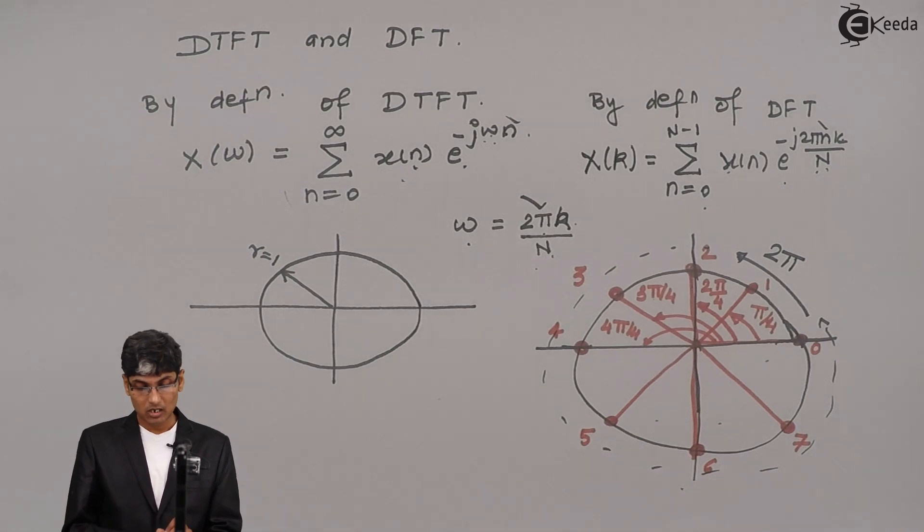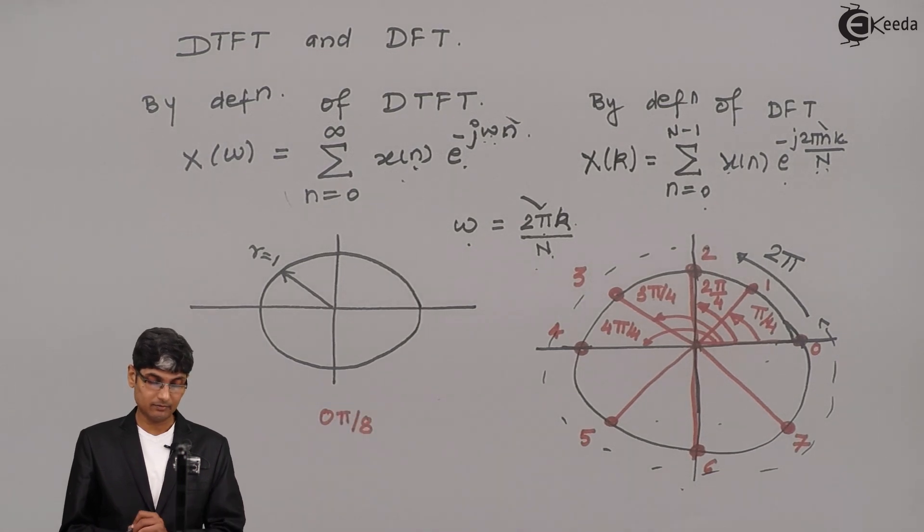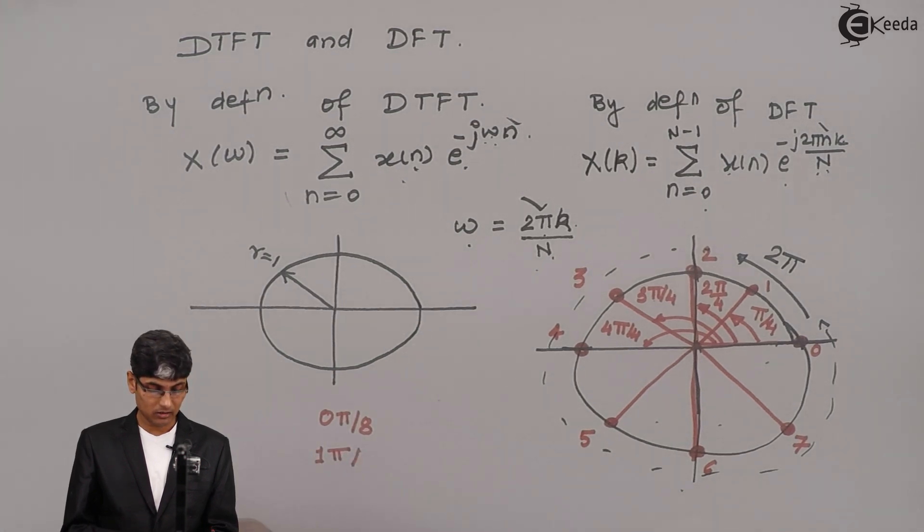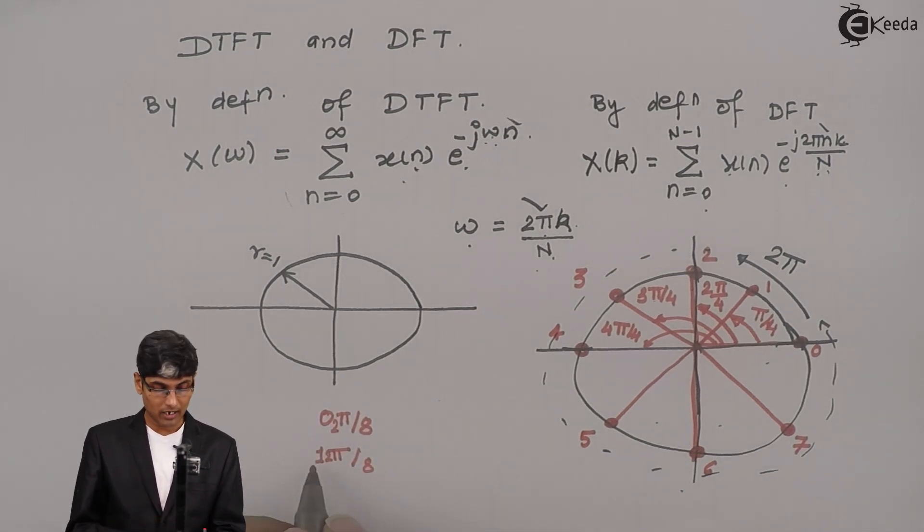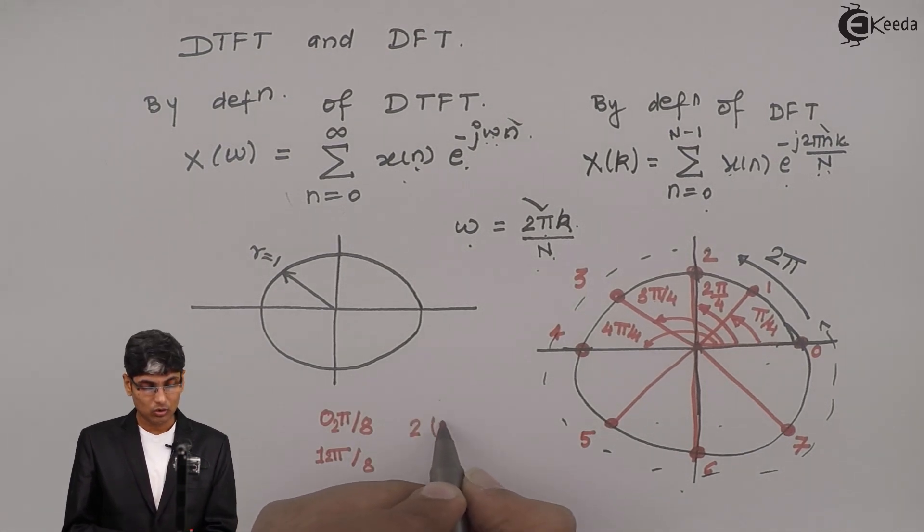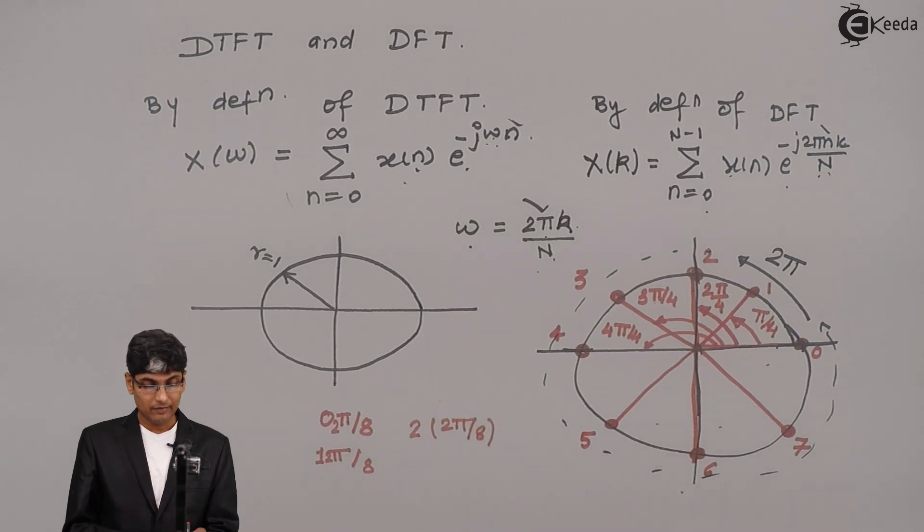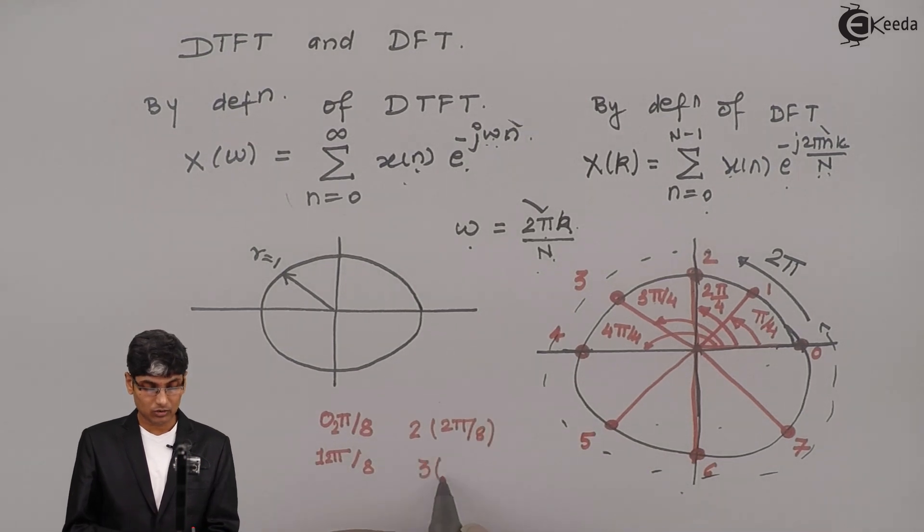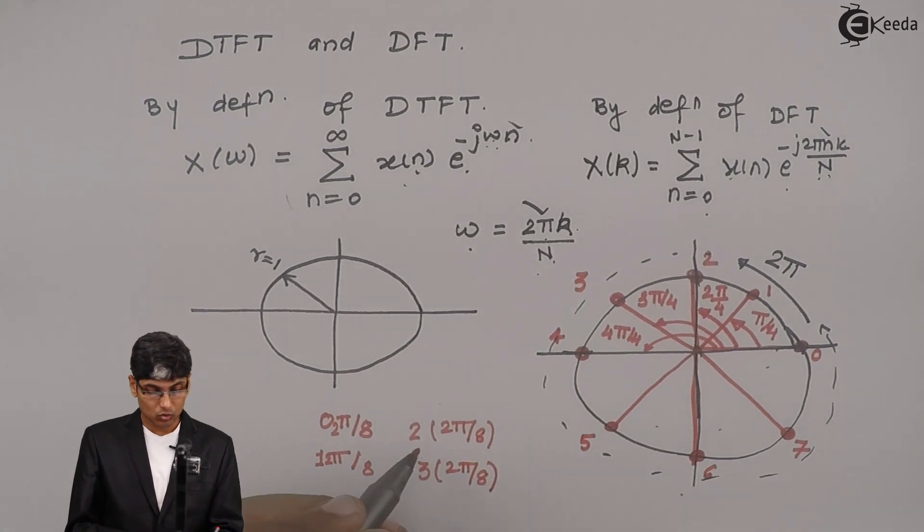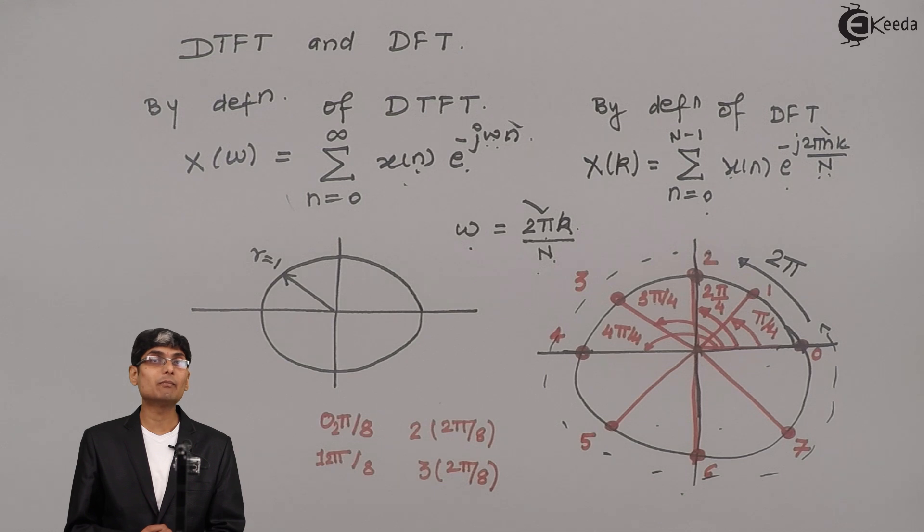So if I write like this: 0·π/8 is my first angle, no harm. Then I write 1·2π/8, 0·2π/8, 1·2π/8, then I can write 2·2π/8, then I can write 3·2π/8, and so on.